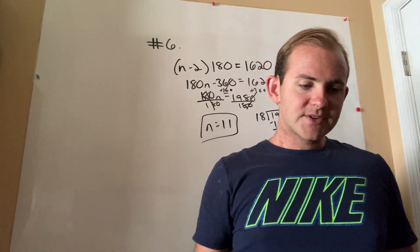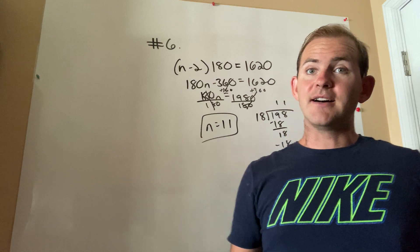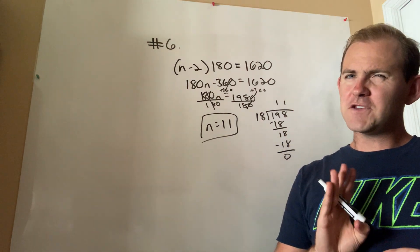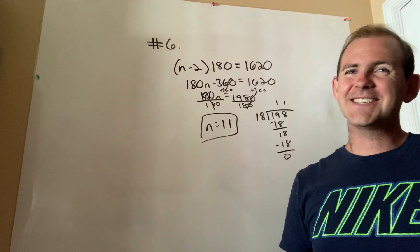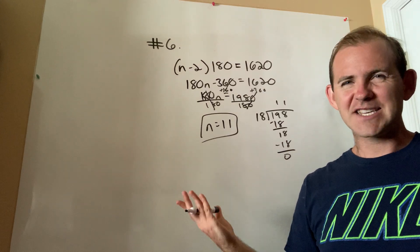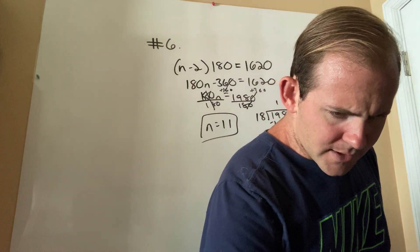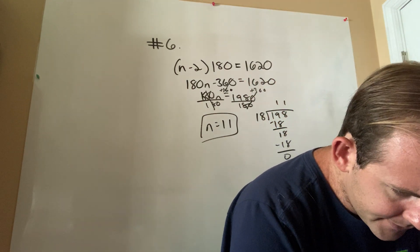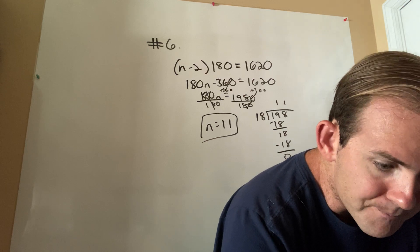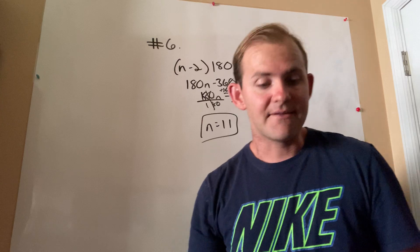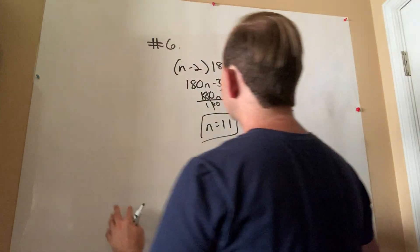So for example number 6, we would simply say that the polygon has 11 sides, which we could call an 11-gon, or if you want the true name for it, it's actually a hendecagon. Don't ask me where they come up with these names. I don't even know. For another kind of like medium level example, let's take a look at number 11.